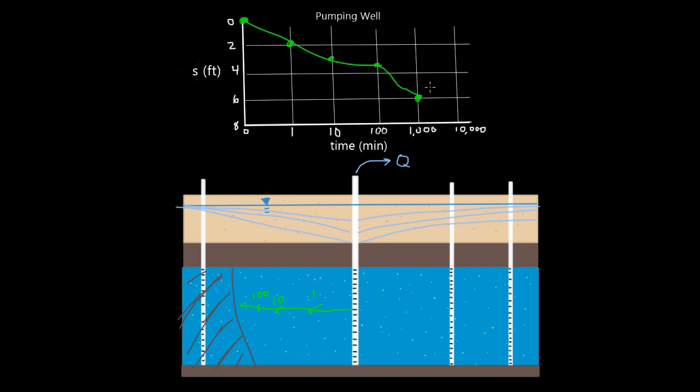So once our radius of influence reaches that impermeable boundary, we've hit the limit of our aquifer setting. Our glass has stopped. We've got this sort of bathtub effect going on. I like to think of it as like a bathtub, right? We've hit the wall of the bathtub.